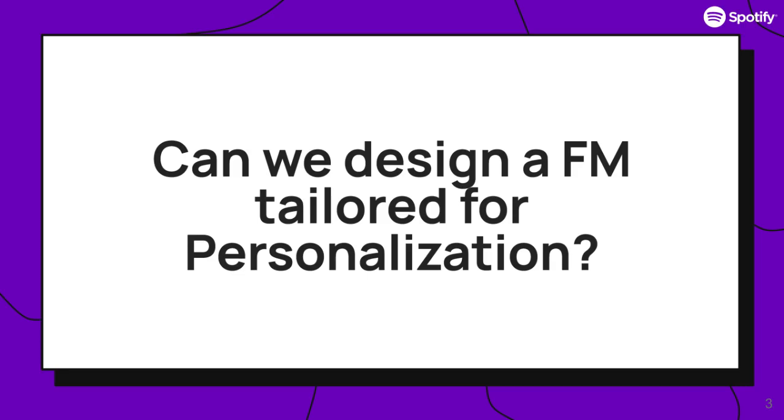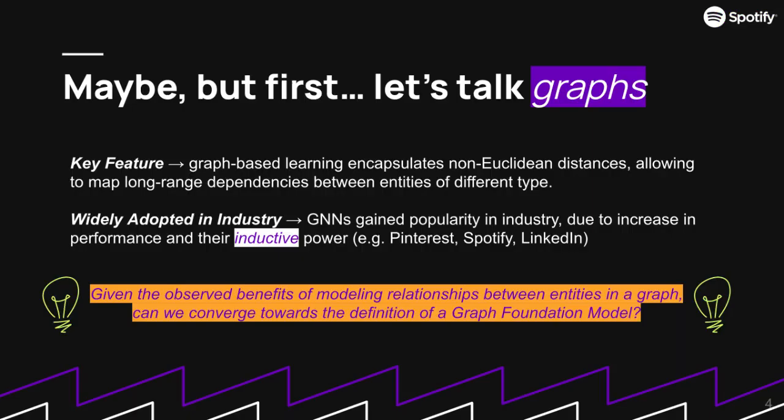To answer this question, we connect to another popular technology in machine learning literature, which are graph-based learning architectures. Those are particularly popular given the fact that they can map non-Euclidean distances and relationships between items. In this way, they can map long-term dependencies between entities of different types. These models are particularly popular in industry since they've been showing increases in performance in different domains and different applications, thanks to their inductive power.